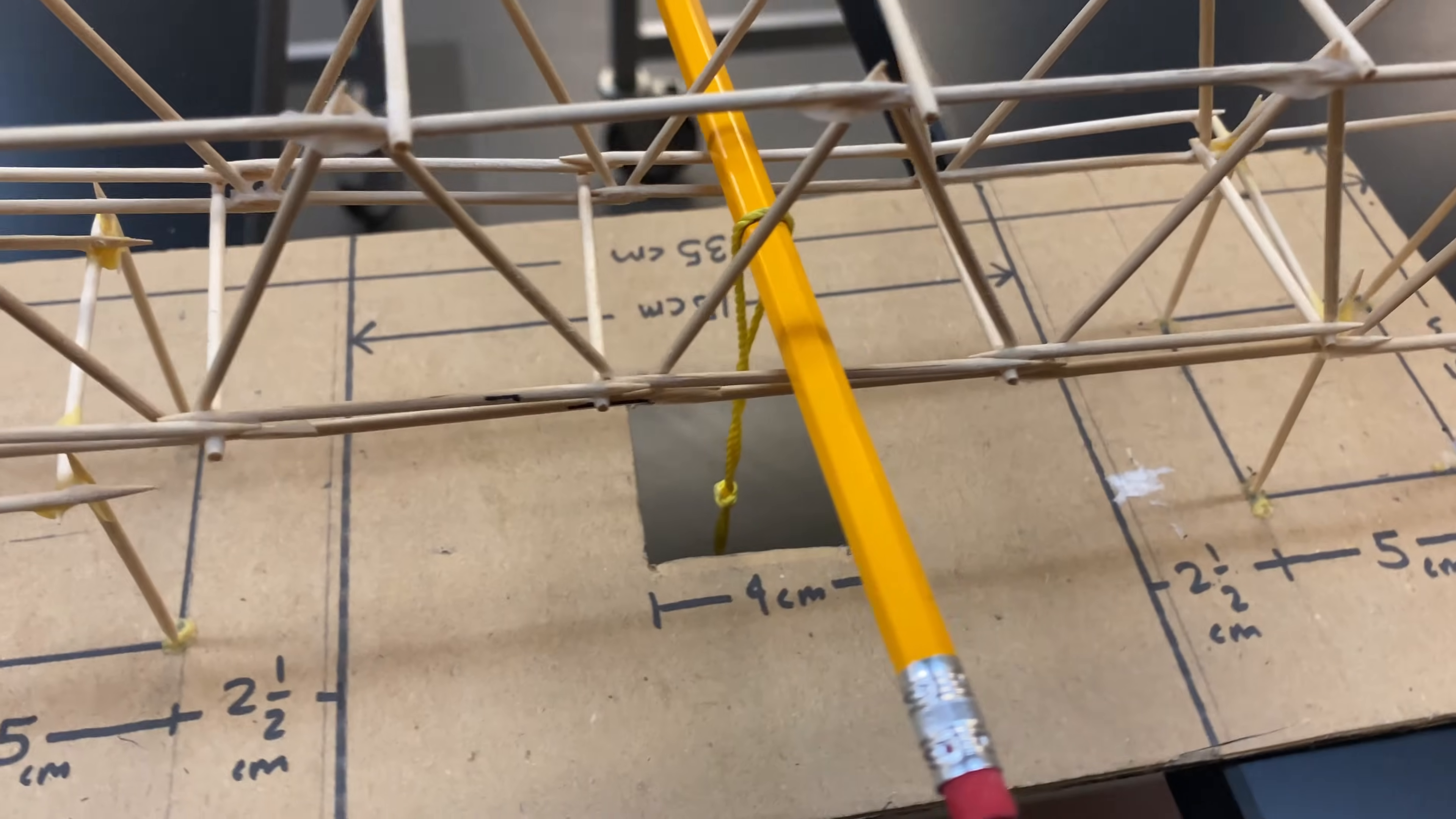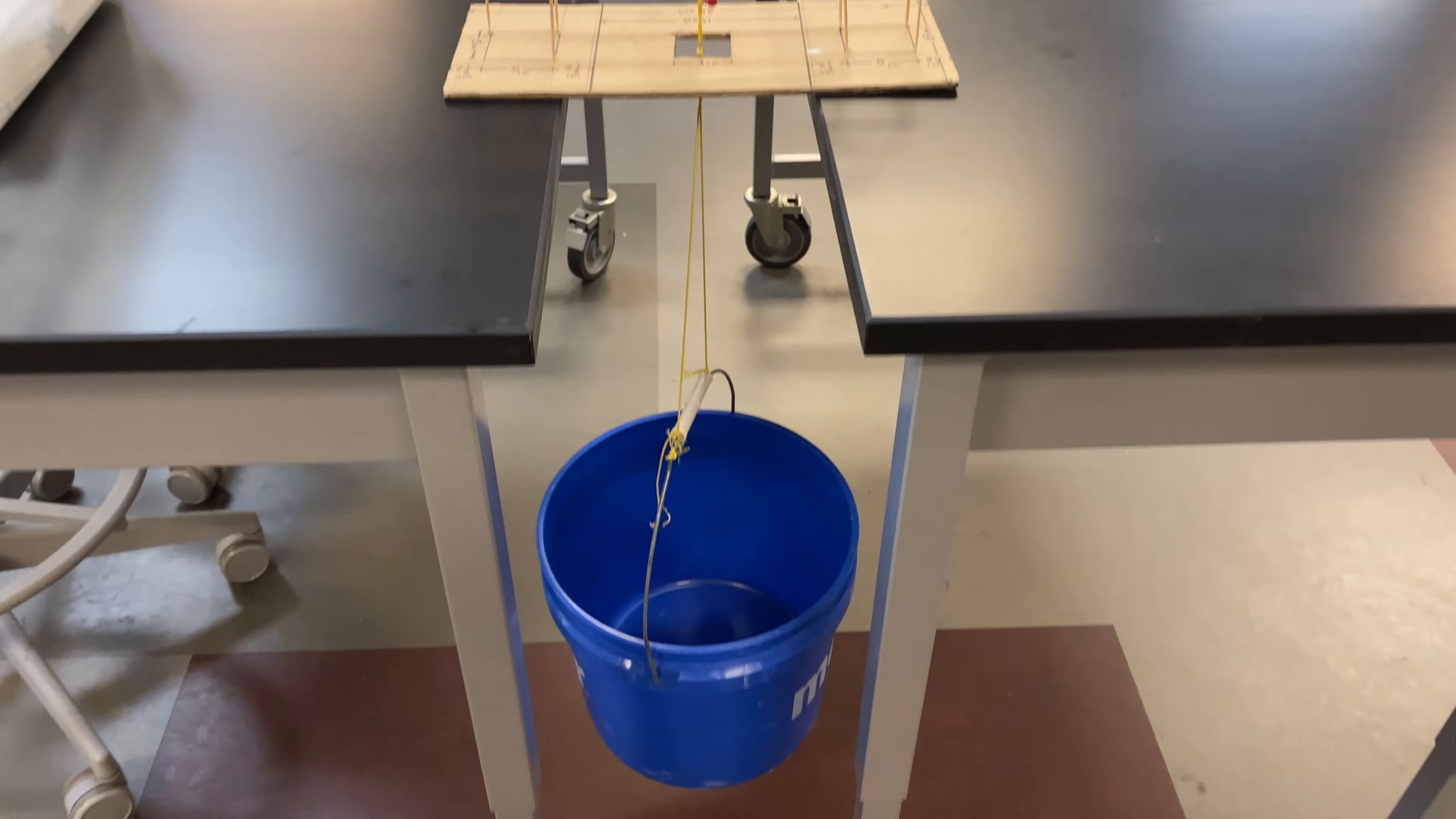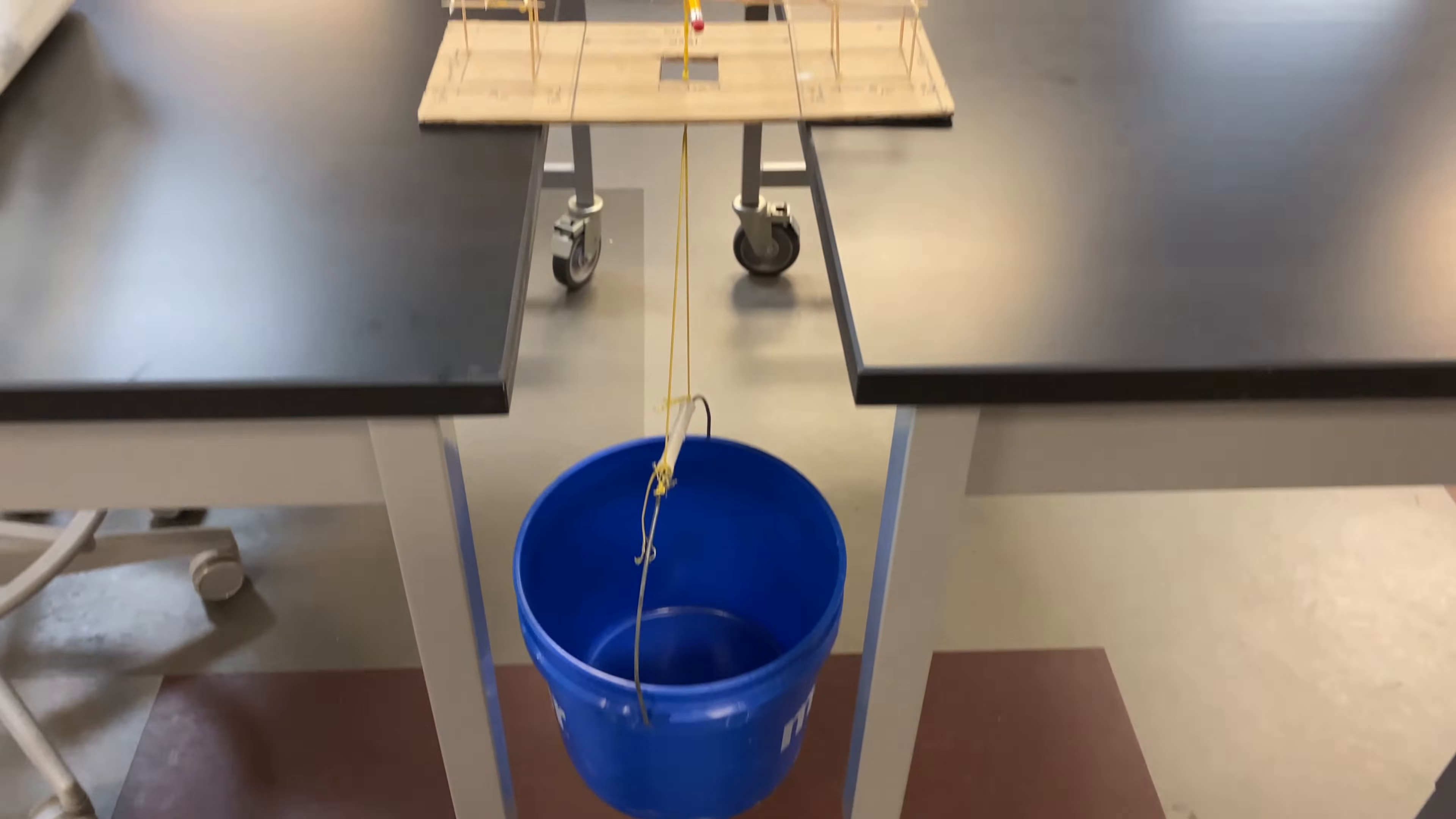A hole is cut in the middle of the land, the cardboard land, so that a bucket can be hung beneath the bridge like this. Weights can be added to the bucket one at a time until the bridge fails.